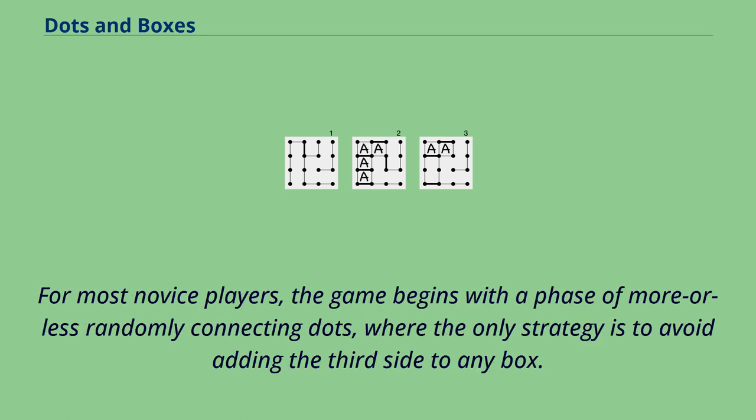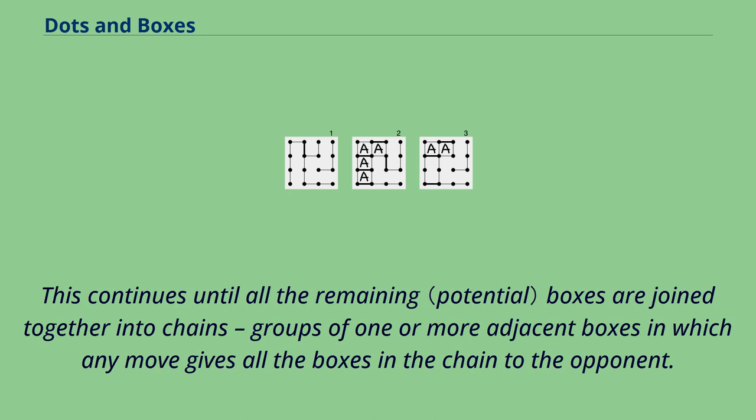For most novice players, the game begins with a phase of more or less randomly connecting dots, where the only strategy is to avoid adding the third side to any box. This continues until all the remaining boxes are joined together into chains, groups of one or more adjacent boxes in which any move gives all the boxes in the chain to the opponent.